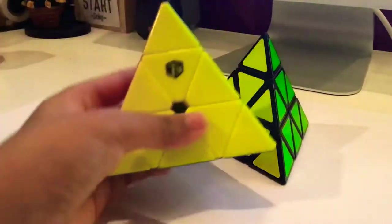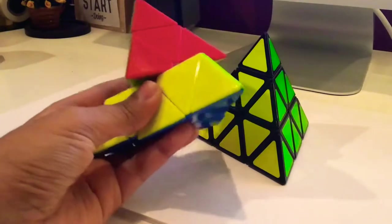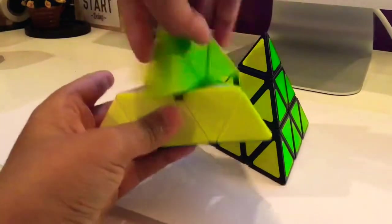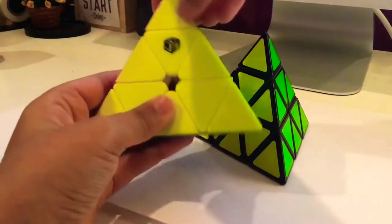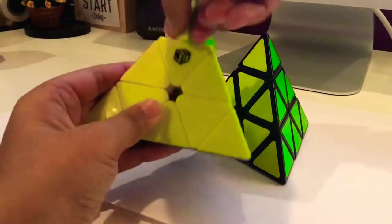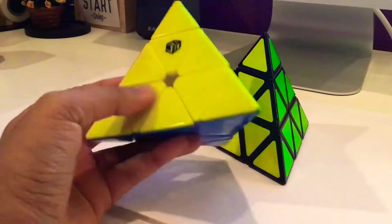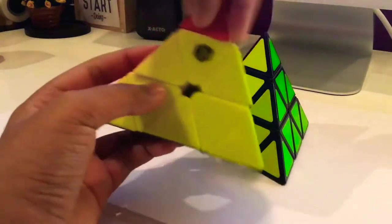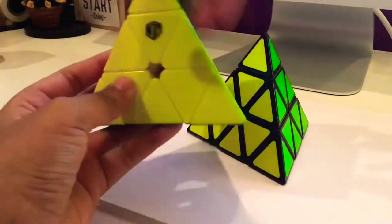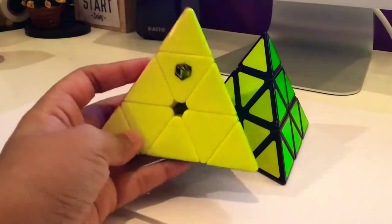And then next I have the stickerless X-Man Bell which is really nice and smooth. The tips are also magnetic which I don't like, and I still haven't figured out how to take out the magnets from the tips. But overall, this is a great pyraminx that I got this year for Christmas.